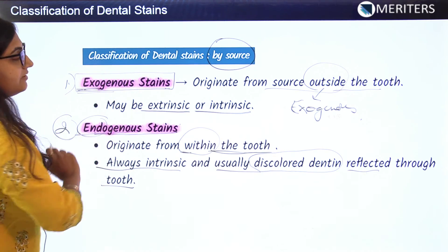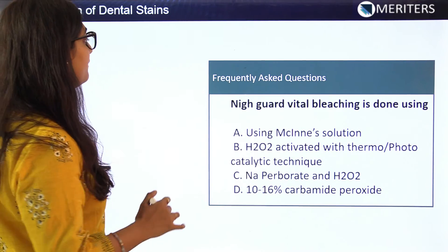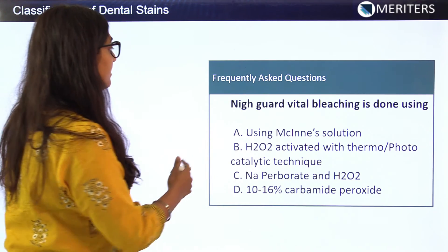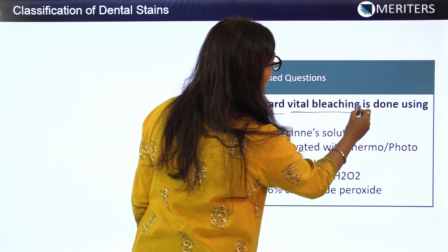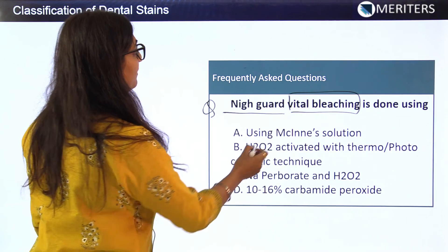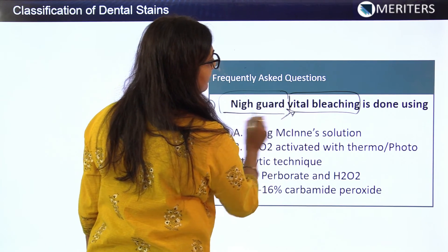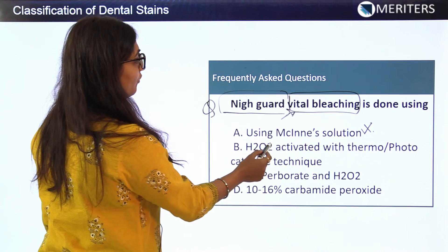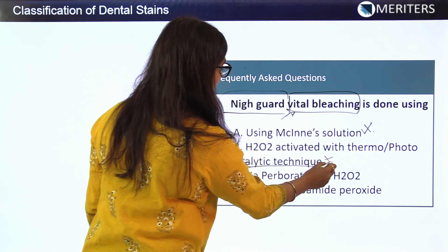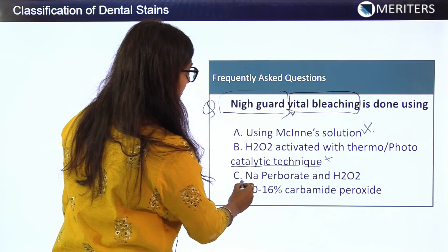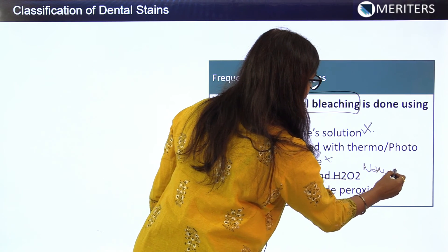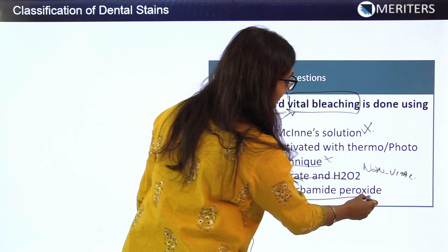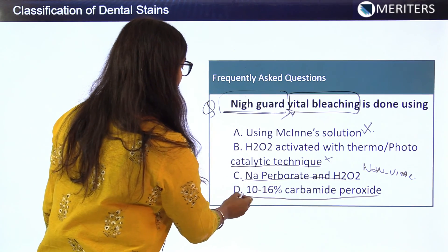Most exam questions from dental bleaching are based on the composition and concentration of bleaching agents. For example: night guard vital bleaching is done using which agent? Options include Mackin's solution, H2O2 activated with thermo and photo (thermo-catalytic technique), sodium perborate and H2O2 (used for non-vital technique), and 10 to 16 percent carbamide peroxide — which is the correct answer for the night guard vital bleaching technique.